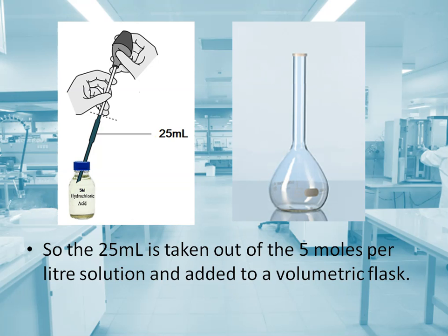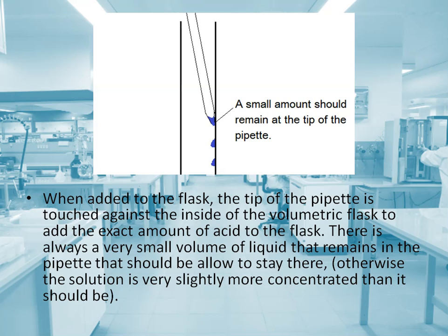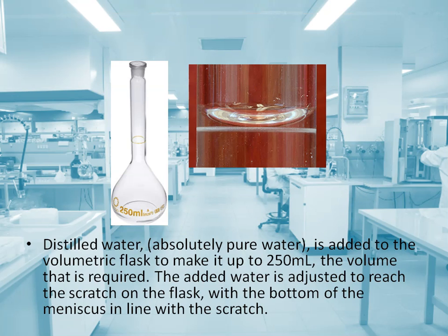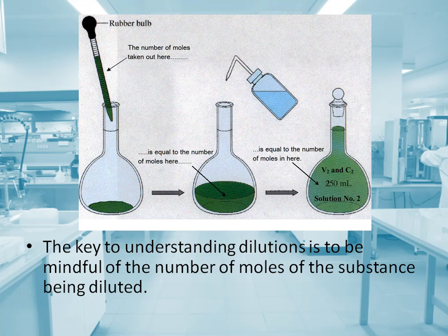The acid is added to a volumetric flask. When added to the flask, the tip of the pipette is touched against the side of the volumetric flask to add the exact amount of acid. There is always a very small volume of liquid that remains in the pipette — that should be allowed to stay there, otherwise the solution will be slightly more concentrated than it should be. Distilled water — absolutely pure water — is then added to make it up to 250 milliliters, adjusting until the bottom of the meniscus is in line with the scratch on the flask.